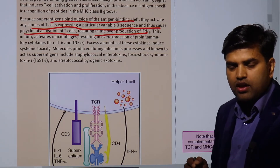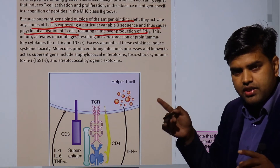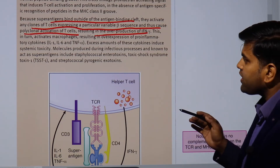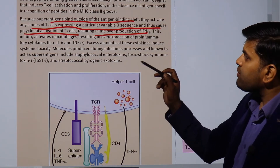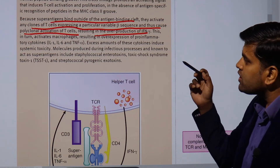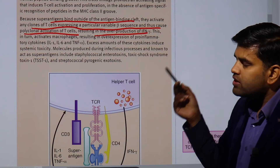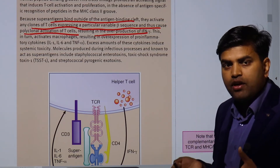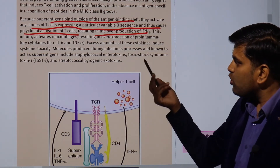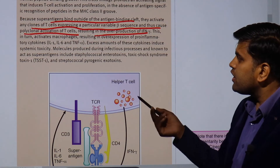Normally there is monoclonal activation — one antigen activates and proliferates a T-cell. But here we have polyclonal activation. This in turn activates macrophages, resulting in overproduction of pro-inflammatory cytokines like interleukin-1, interleukin-6, and TNF. Excess amounts of these cytokines induce systemic toxicity.